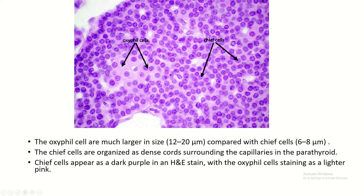This is the H&E stain image of the parathyroid gland. This is the oxyphil cell. Oxyphil cells are much larger in size, 12 to 20 micrometres, and chief cell diameter is 6 to 8 micrometres. And in H&E stain, oxyphil cells stain light pink and chief cells stain dark purple.